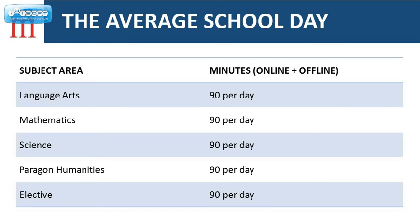On average, students spend 90 minutes per school day on core subjects, which include language arts, mathematics, science, and Paragon, our specialized social studies and humanities program. In addition, students will spend 30 minutes per day studying an elective course, such as computers or a foreign language.